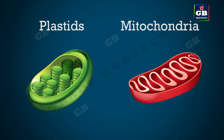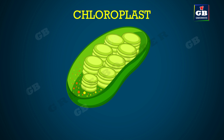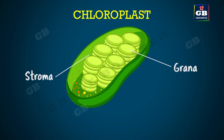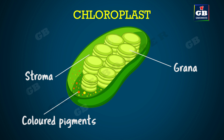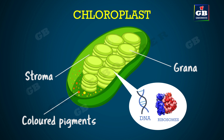Externally, that means from the outside look, plastids look similar to mitochondria. If we observe the internal organization of a chloroplast, the innermost membrane is folded and arranged in stacks called as grana. The space between the grana is filled by stroma. Just like mitochondria, plastids also have their own DNA and ribosomes and can make their own proteins.